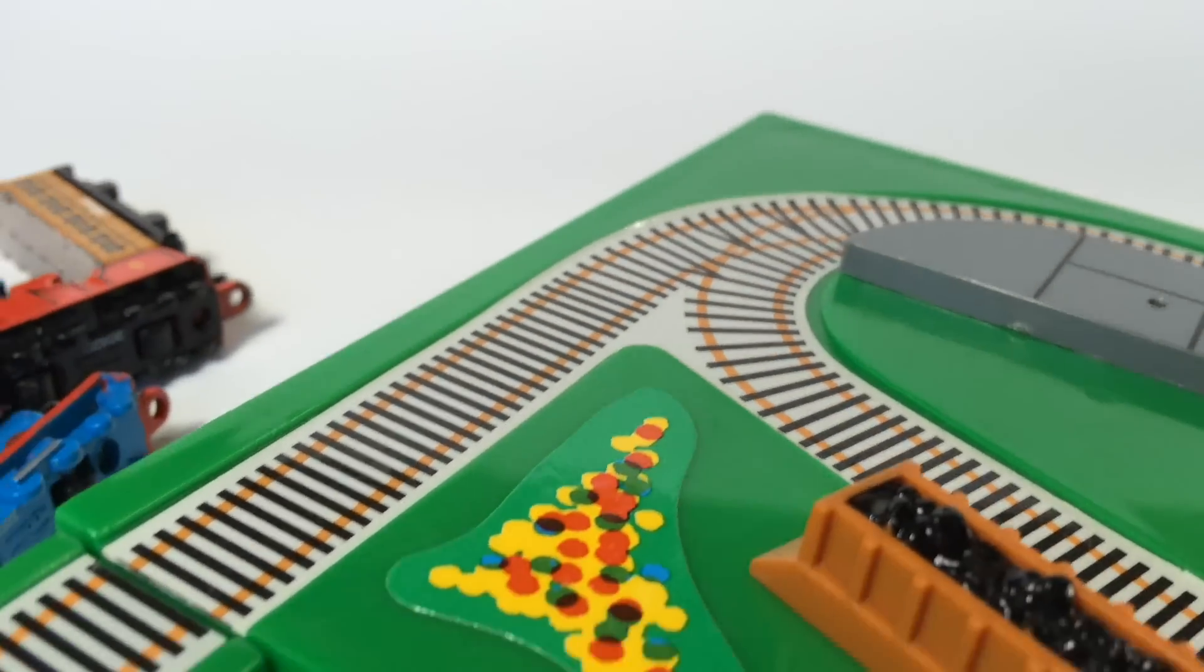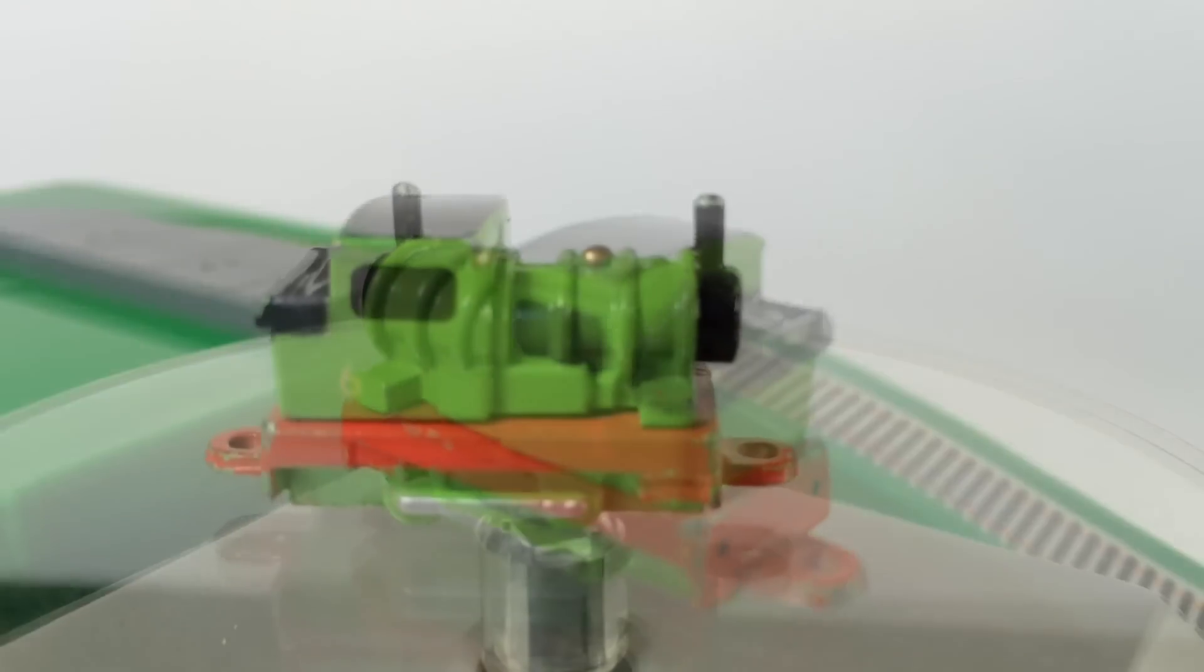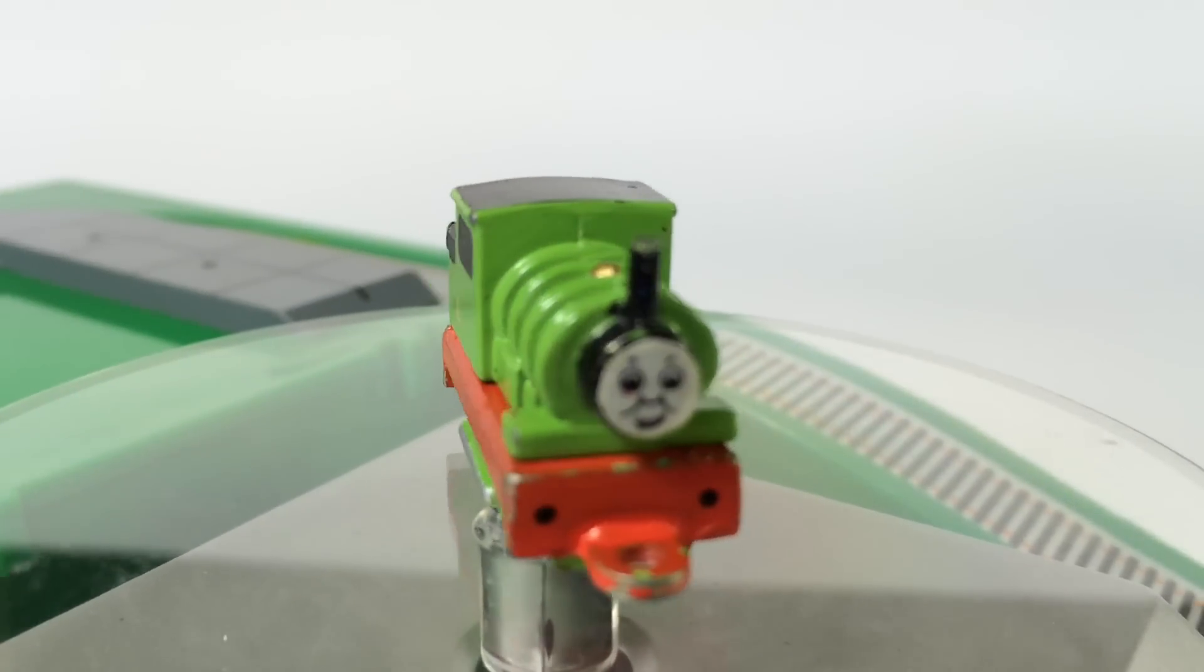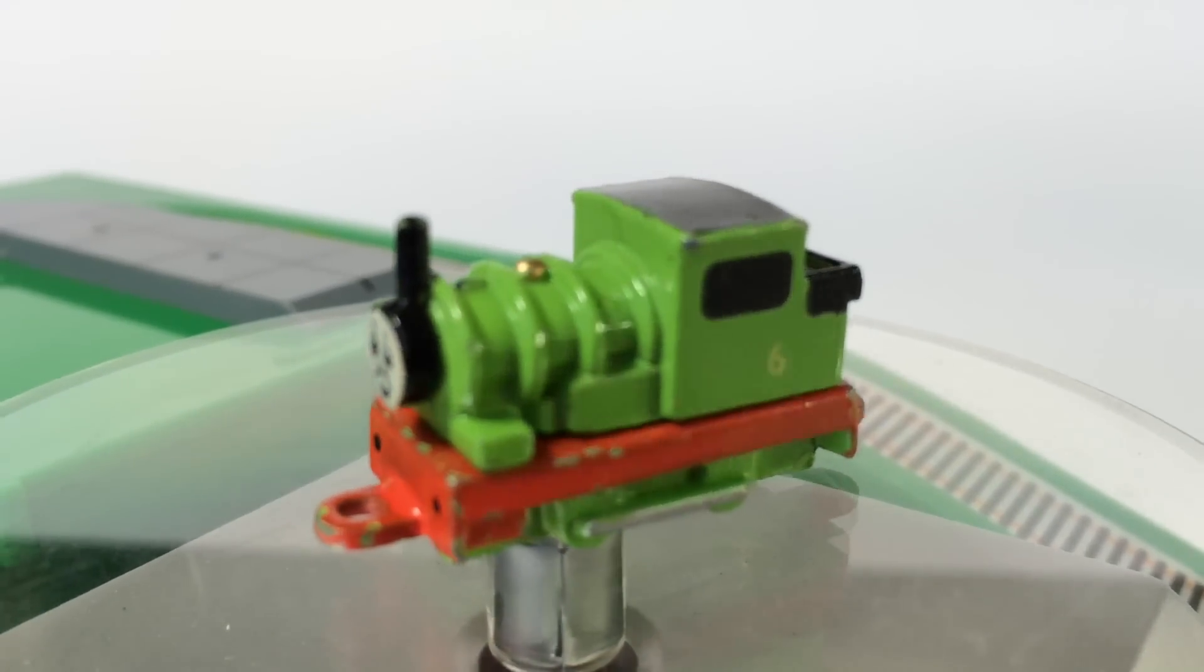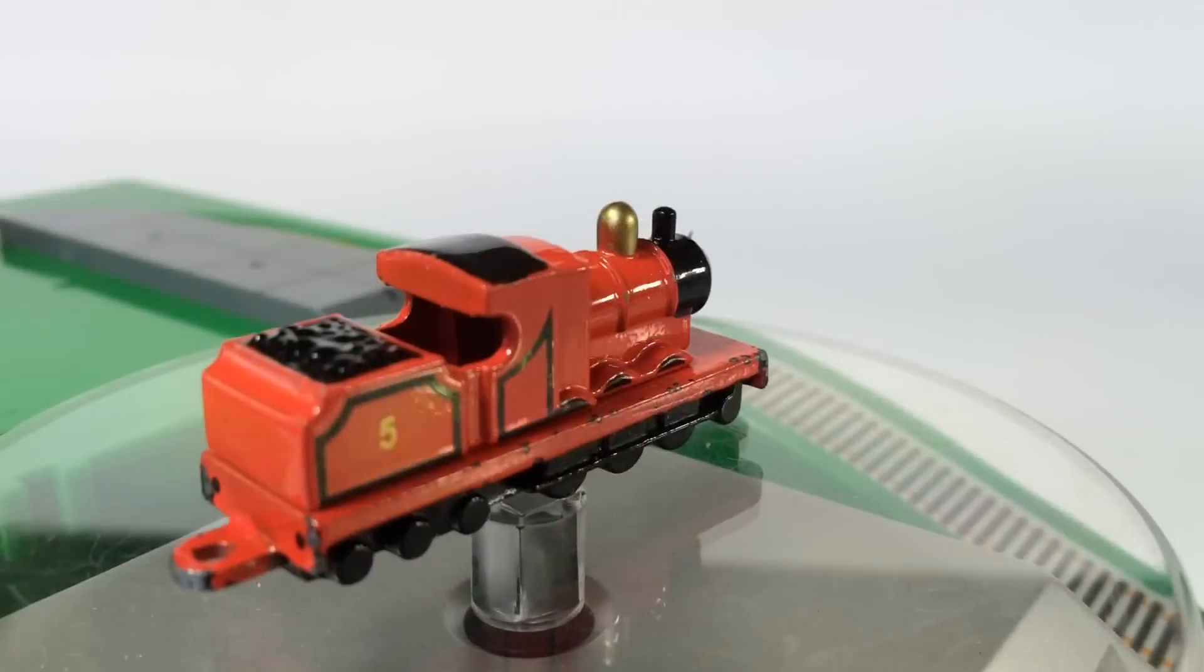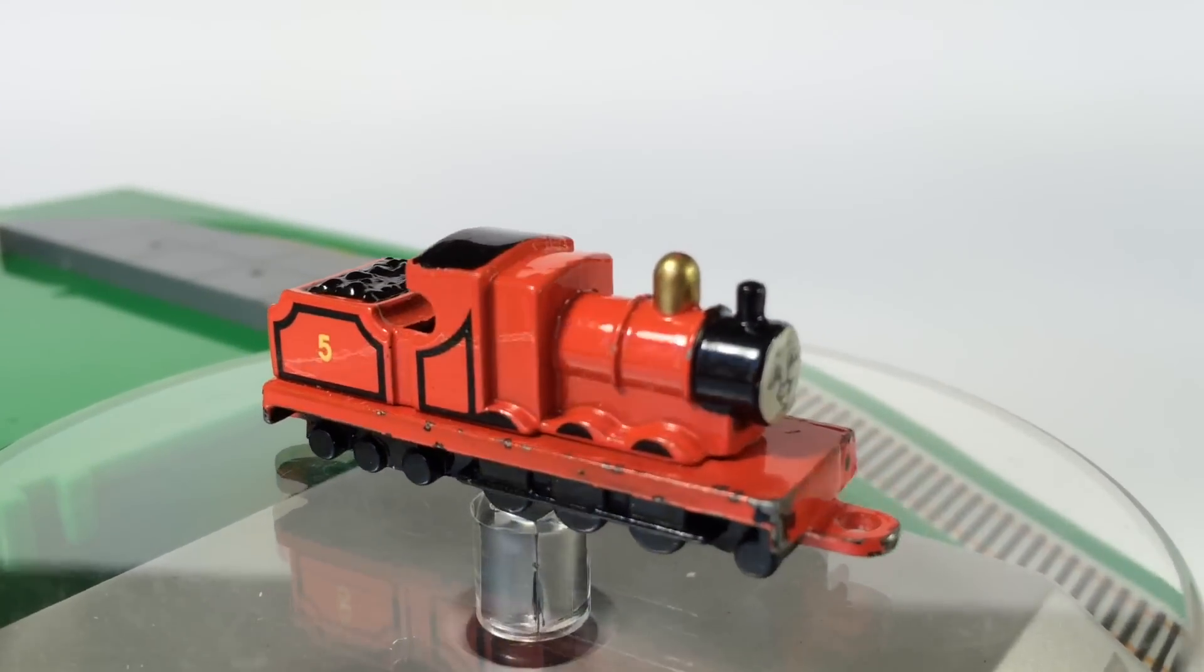What goes all the way up here comes all the way down. So these are the characters here. You can see Percy, and these are diecast. Can you believe that? Here you can see it's number five engine of Sodor Island.